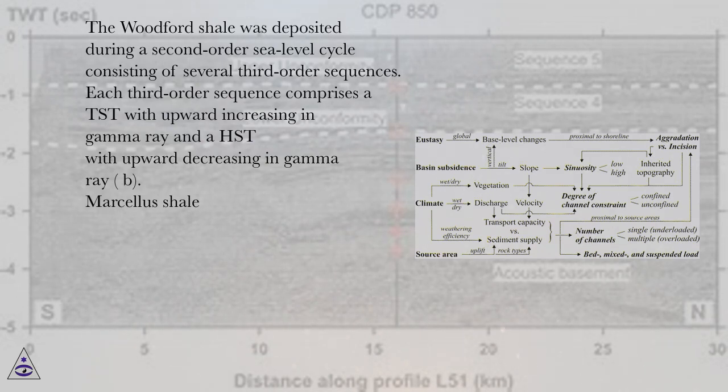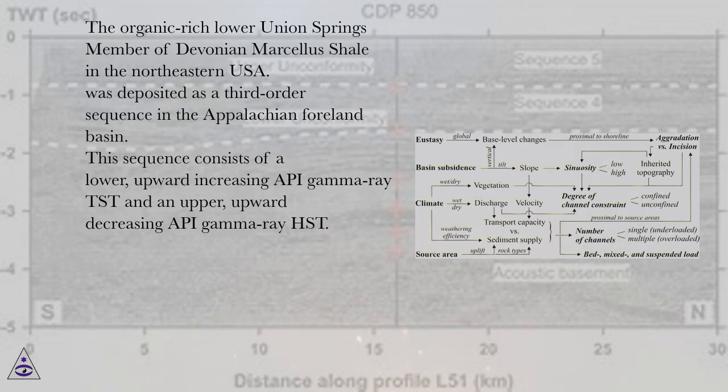Marcellus shale. The organic-rich lower Union Springs member of Devonian Marcellus shale in the northeastern USA was deposited as a third-order sequence in the Appalachian Foreland Basin. This sequence consists of a lower upward-increasing API gamma-ray TST and an upper upward-decreasing API gamma-ray HST.